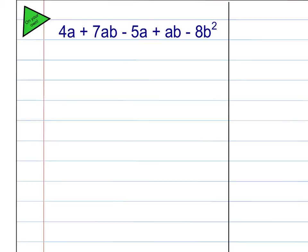Alright, to do this one, I always just start at the beginning, and I see a 4A. So, I look down, and I see are there any other ones that just have an A in them, and I see here I have a negative 5A. All the other ones have the AB combination or a B squared, so those are different and cannot be combined. So, 4A minus 5A is a negative 1A, and I'm going to write it as a negative A, because that's equivalent to negative 1A.